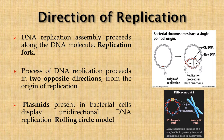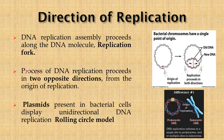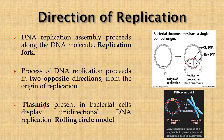Now let us talk about the direction of replication. DNA replication assembly proceeds along the DNA molecule at the replication fork. The process of DNA replication — in both prokaryotes as well as eukaryotes — proceeds in two opposite directions from a single origin of replication. However, plasmids present in bacterial cells display unidirectional DNA replication in the form of a rolling circle model.